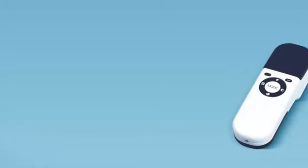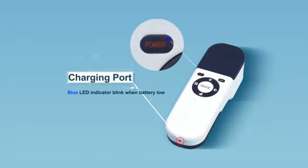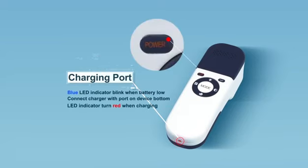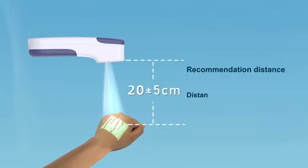Blue LED indicator on power button will blink when battery is low. To charge VeinFinder, connect the charger with AC power and insert the charging cable into the bottom port of the device. The indicator turns red during charging. When battery is fully charged, the indicator turns green.